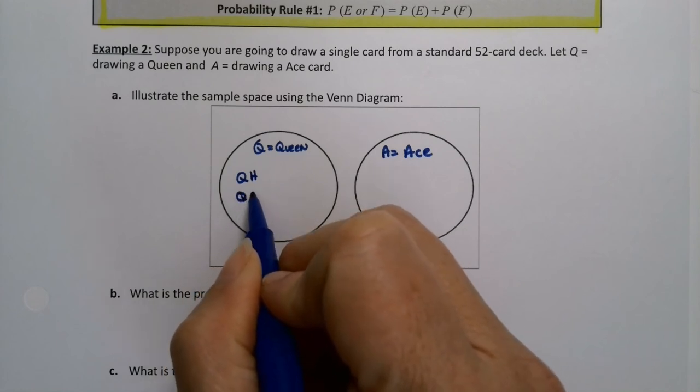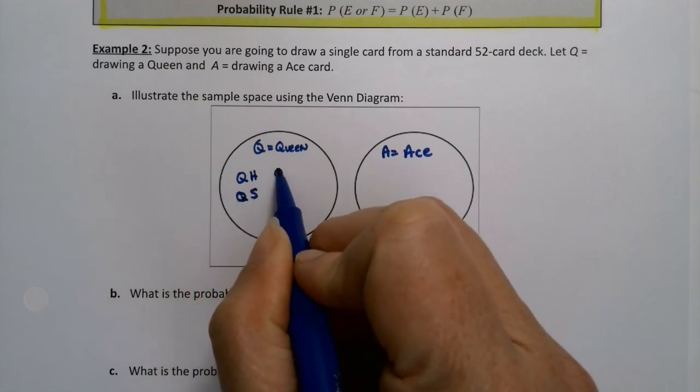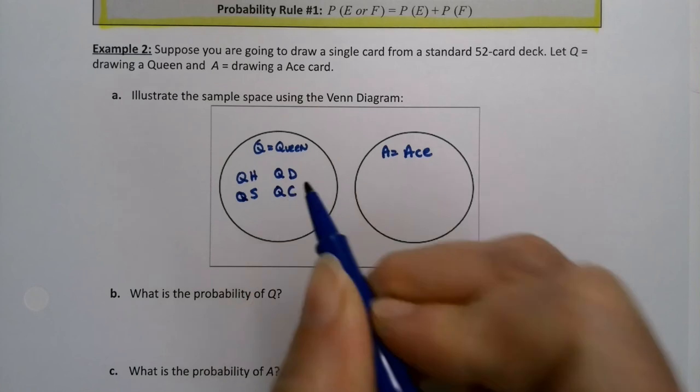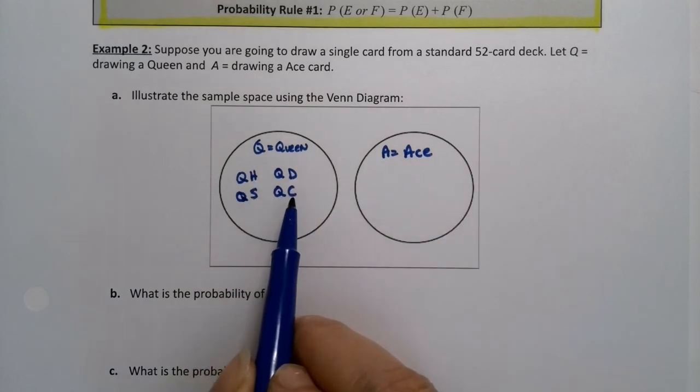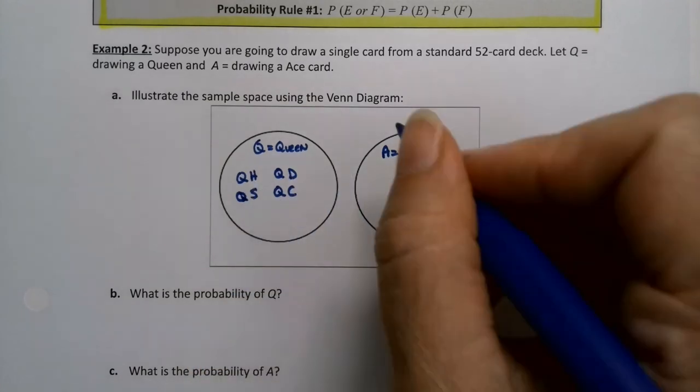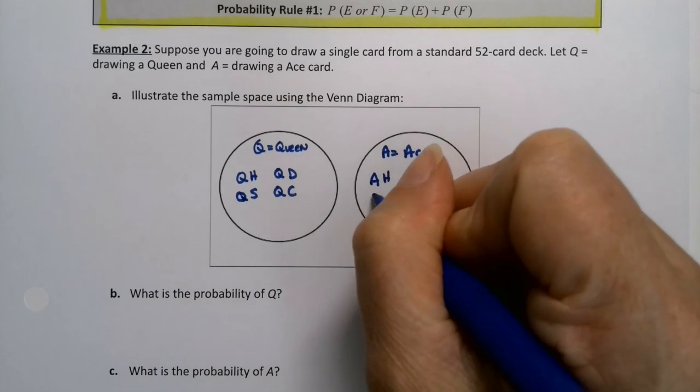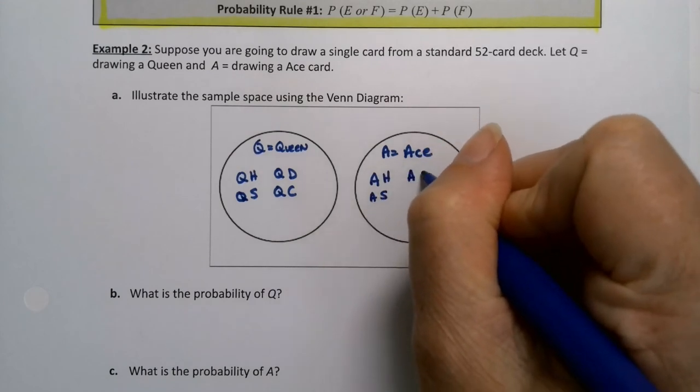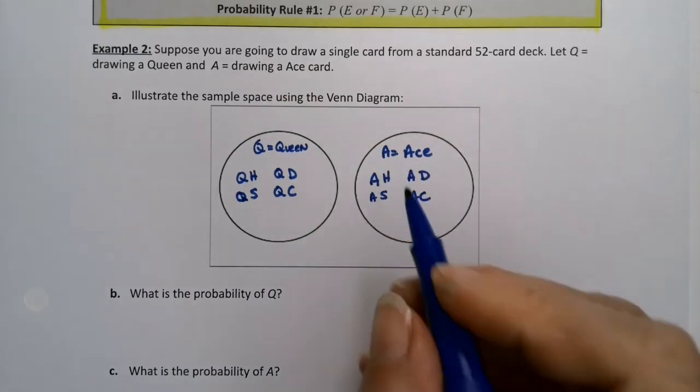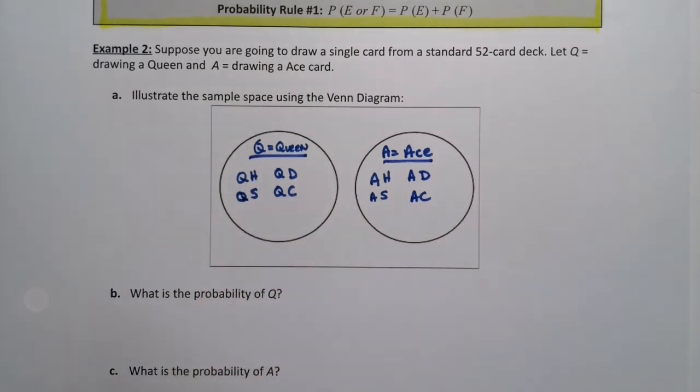So what's over here is the queen of hearts, the queen of spades, the queen of diamonds, and the queen of clubs. Hearts, spades, diamonds, and clubs all have different letters, so that works out great for me. And then here you have the ace of hearts, the ace of spades, the ace of diamonds, and the ace of clubs. So there are your two groups.